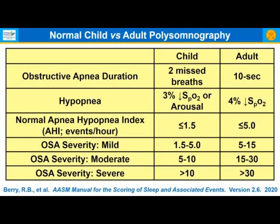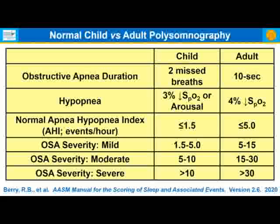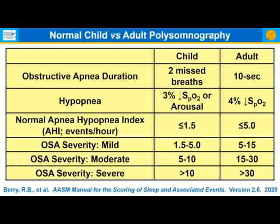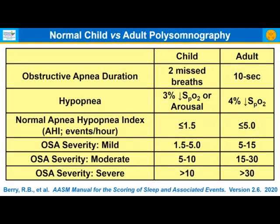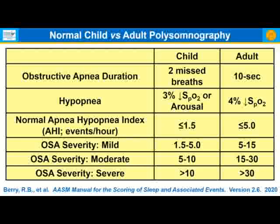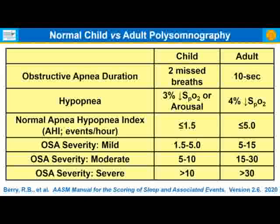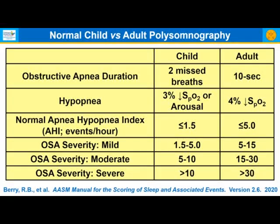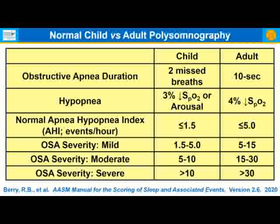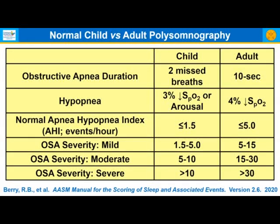The definitions of apneas differ between children and adults. For obstructive sleep apnea in children, an obstructive apnea is defined as two missed breaths; in adults, it's 10 seconds. Hypopnea in children is defined as a drop in saturation of 3% or an arousal; in adults, it's a 4% drop. Normal apnea-hypopnea index in children is less than 1.5 events per hour; in adults, less than 5. Mild OSA in children is an AHI of 1.5 to 5; adults, 5 to 15. Moderate in children is 5 to 10; adults, 15 to 30. Severe in children is greater than 10; adults, greater than 30.